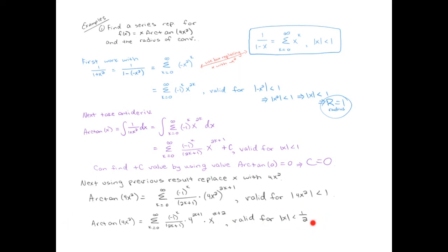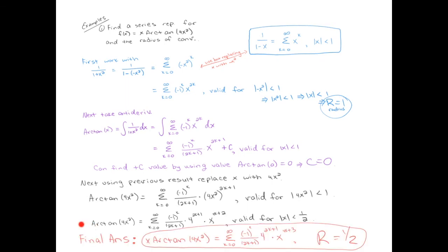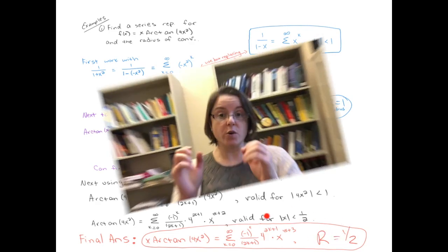We're almost done. Comparing to our original problem, we're just missing the x in front, so we multiply everything by x. Multiplying by x doesn't change the radius of convergence. So our final radius of convergence is 1/2.